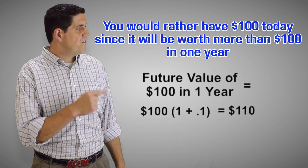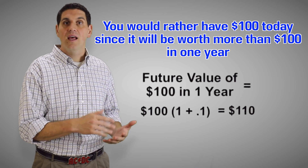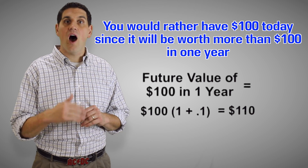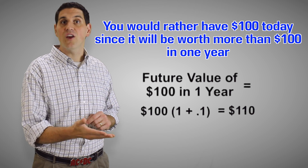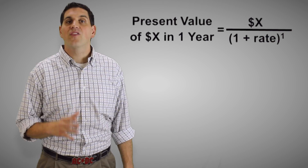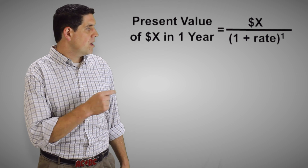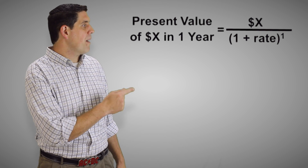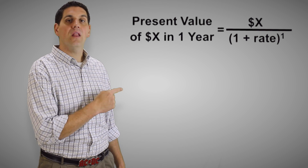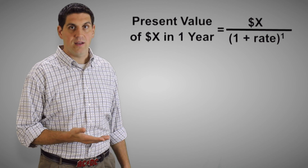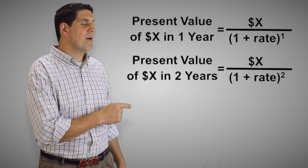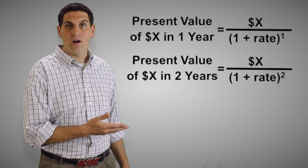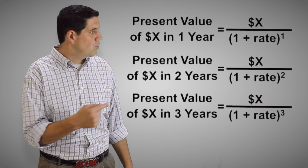Instead of looking at the future value of $100 today, let's look at the present value of $100 a year from now. To get it, you need this equation. The present value of some amount is how much it is in the future divided by 1 plus the interest rate. For two years, it would be that amount divided by 1 plus the interest rate squared. And for three years, it would be cubed.